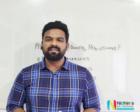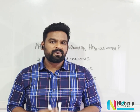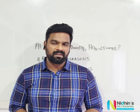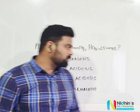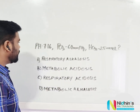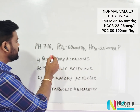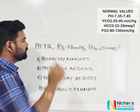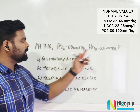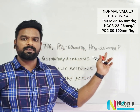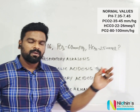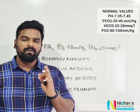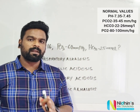Hi all, today we will discuss one previously asked ABG-related question. The question shows pH is 7.16, pCO2 is 60, and bicarbonate is 25. When you get an ABG-related question, the first step is to mark which values are abnormal.